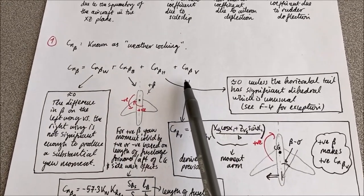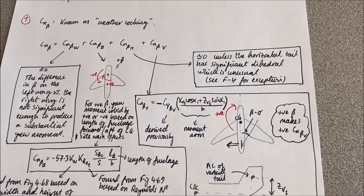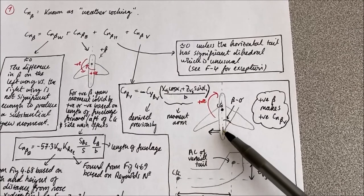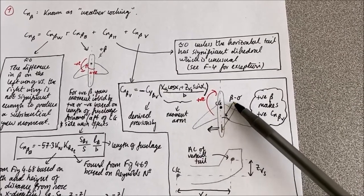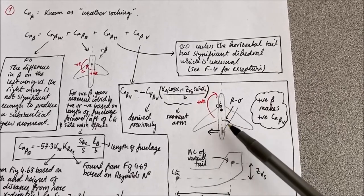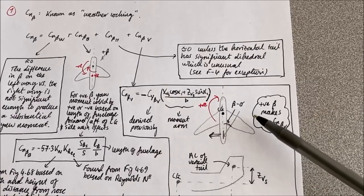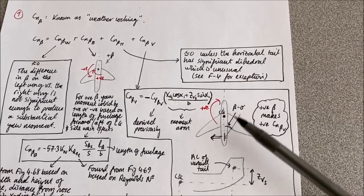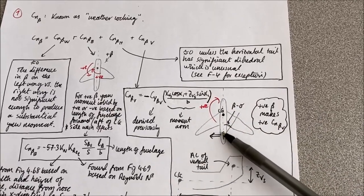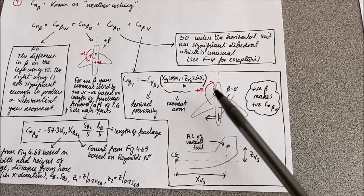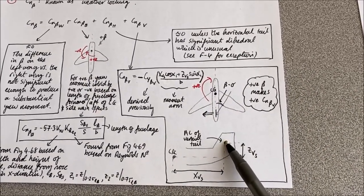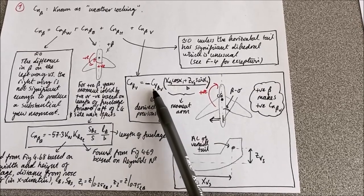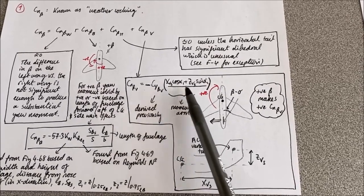Finally, let's look at the yaw moment coefficient due to sideslip on the vertical tail — this is the main effect in the equation, because a large vertical tail exposed to a positive beta angle can produce a significant yawing moment. Positive yaw means the nose turns to the right, so positive sideslip produces a positive yaw moment. We find this contribution from the moment arm between the aerodynamic center of the vertical tail and the center of gravity, multiplied by the lateral force coefficient due to sideslip on the vertical tail — force times moment arm gives the moment.